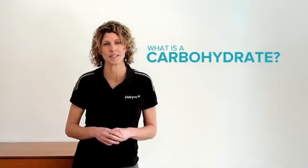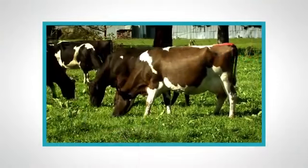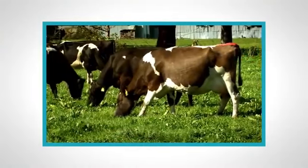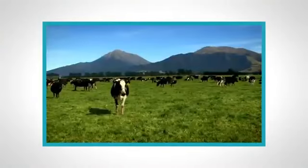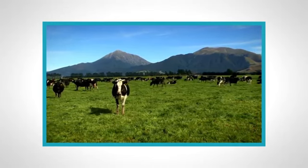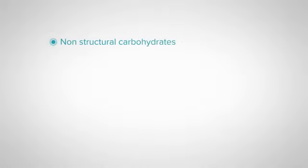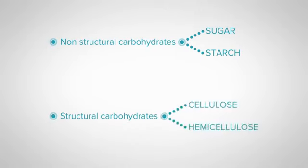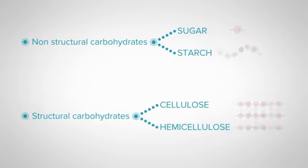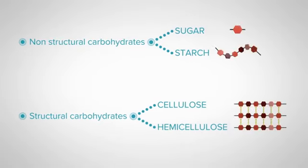What is a carbohydrate? All plants contain carbohydrates and these provide the main energy source for the dairy cow. There are two main types of carbohydrates found in feeds: non-structural carbohydrates, which contain sugar and starches, and structural carbohydrates, which include cellulose and hemicellulose. These carbohydrates are all made up of sugar molecules, with the only difference being the chemical bonds that join them together.